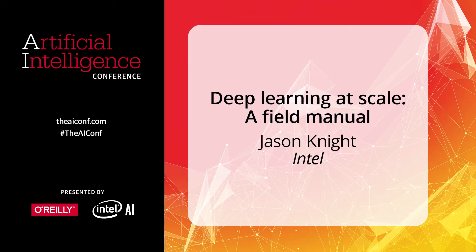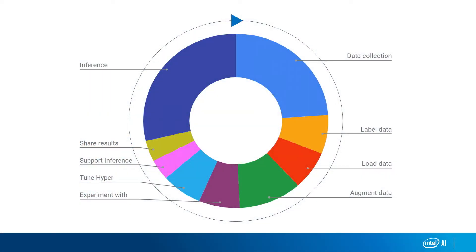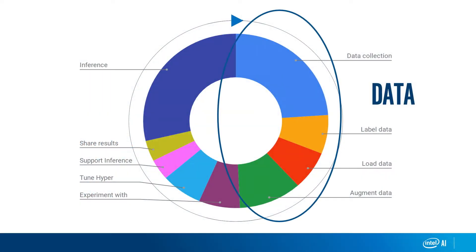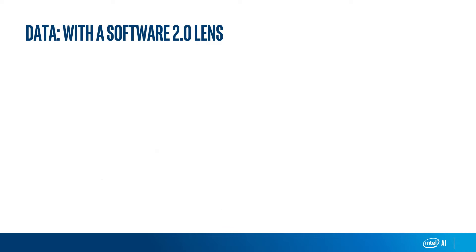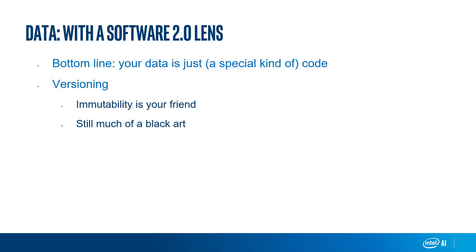Let's look at the deep learning lifecycle and break this down, how this analogy applies each step of the way. The first step is accumulating the data, cleaning it, et cetera. So how does this apply? The bottom line is that your data is just a special kind of code. What I mean by that is that you want to apply the same set of best practices that you do to code as you do to data. One of those is versioning.